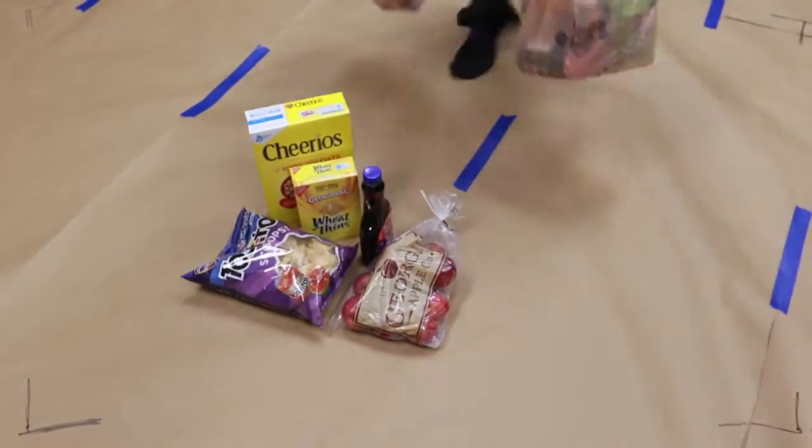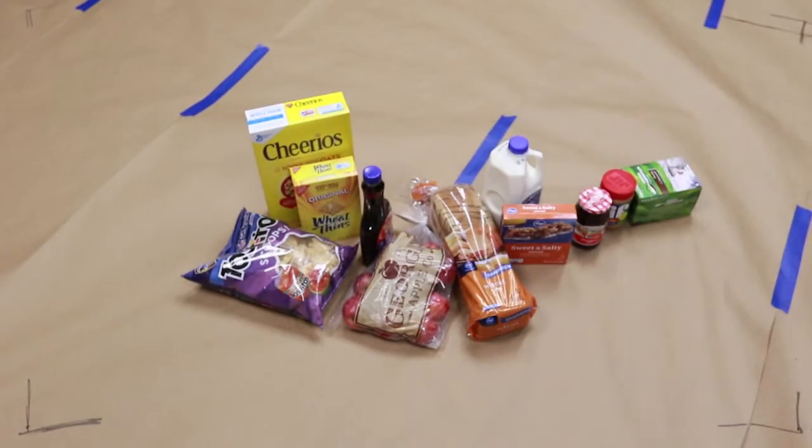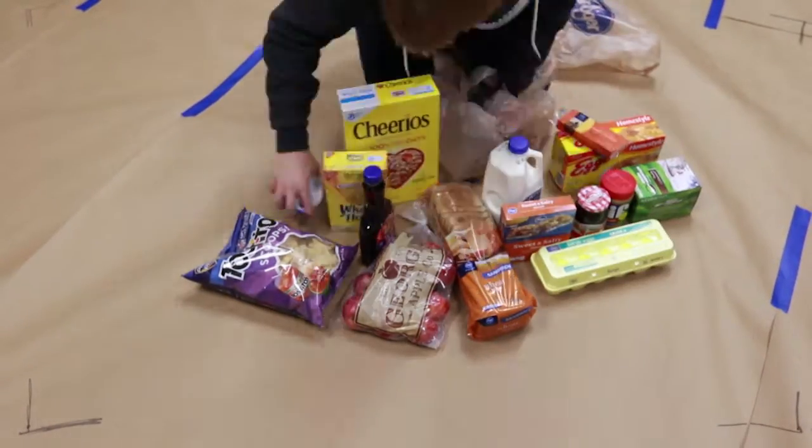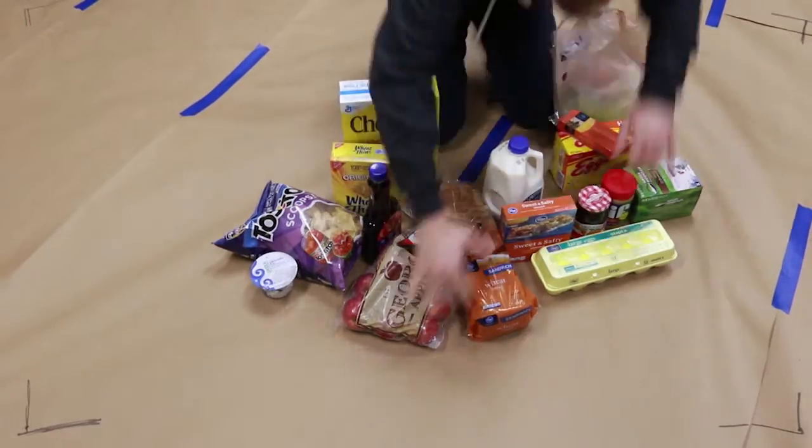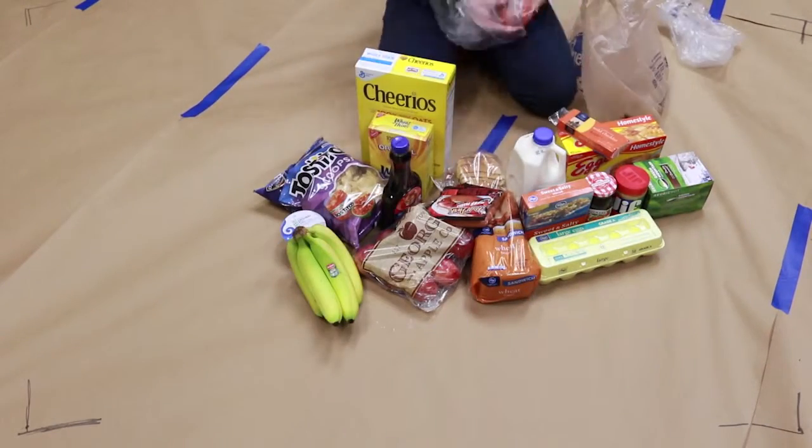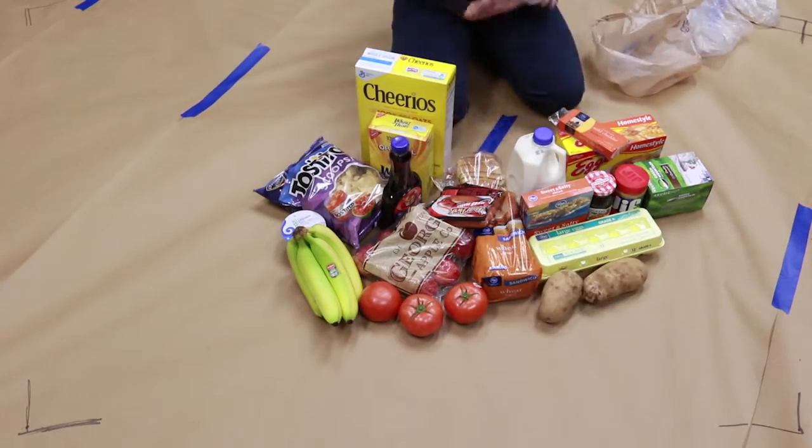The total for the non-organic food came to exactly $61, while the organic food totaled out to $106 and some change. That's a $45 difference. We'll break down more of that math in a second.